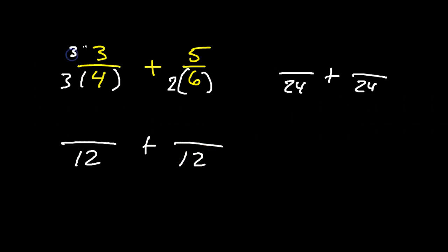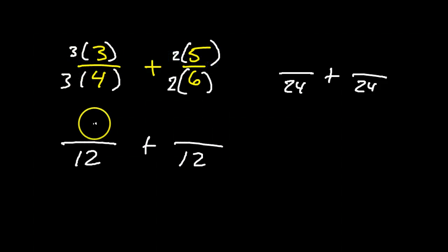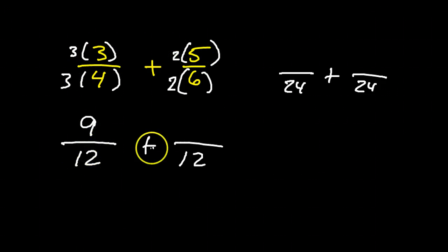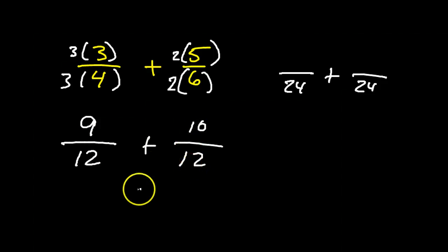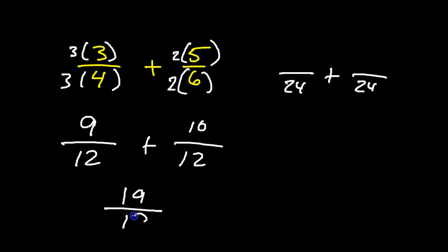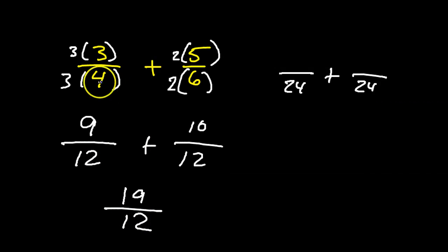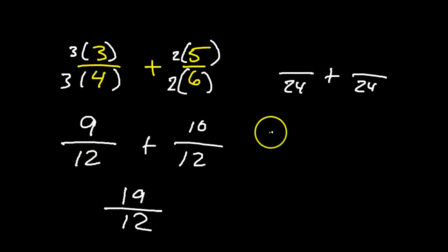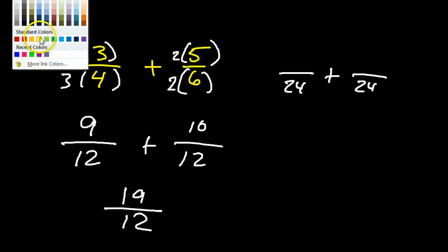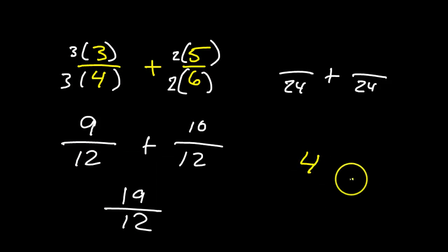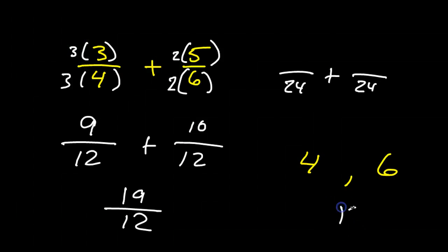Just to continue with this example, we would do the numerators as well, and that would make 9 over 12 plus 10 over 12, which adds together to make 19 over 12. So the concept we're focusing on is least common multiple. If we look at 4 and 6, the least common multiple is the 12 that we turn them both into.